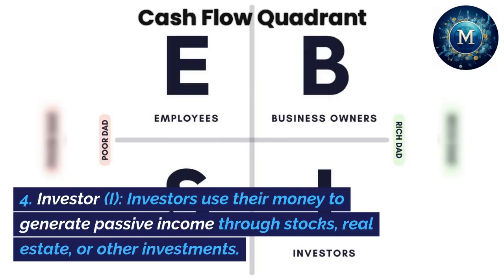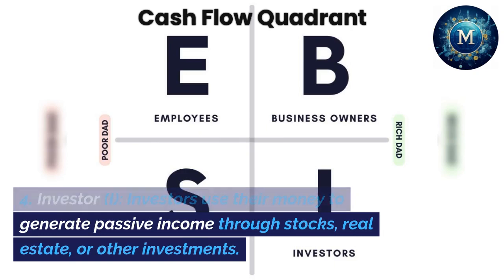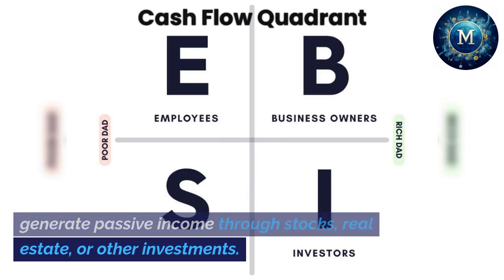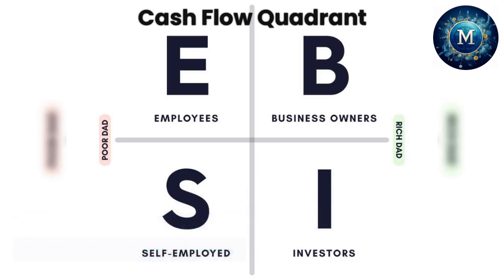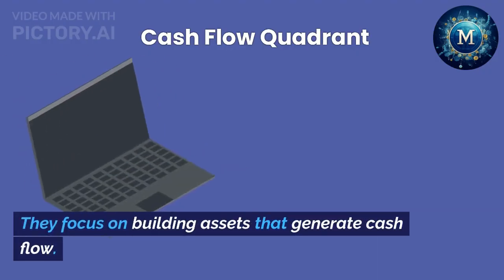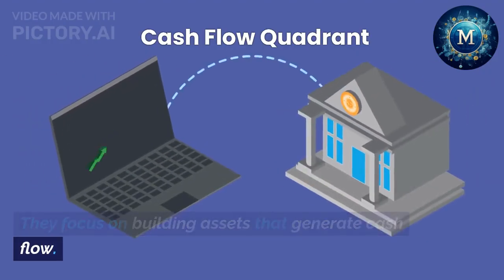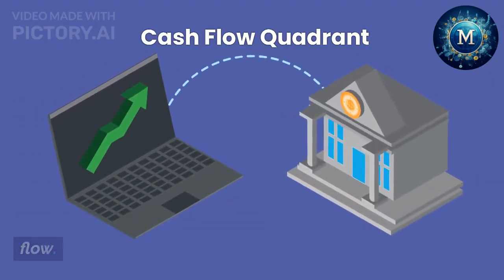4. Investor (I). Investors use their money to generate passive income through stocks, real estate, or other investments. They focus on building assets that generate cash flow.